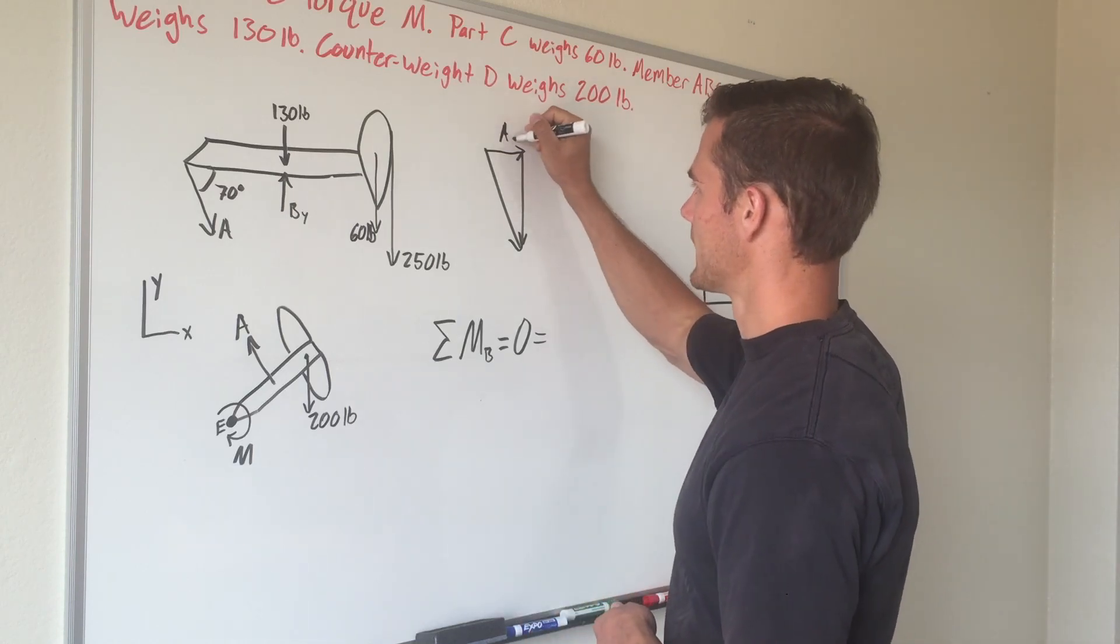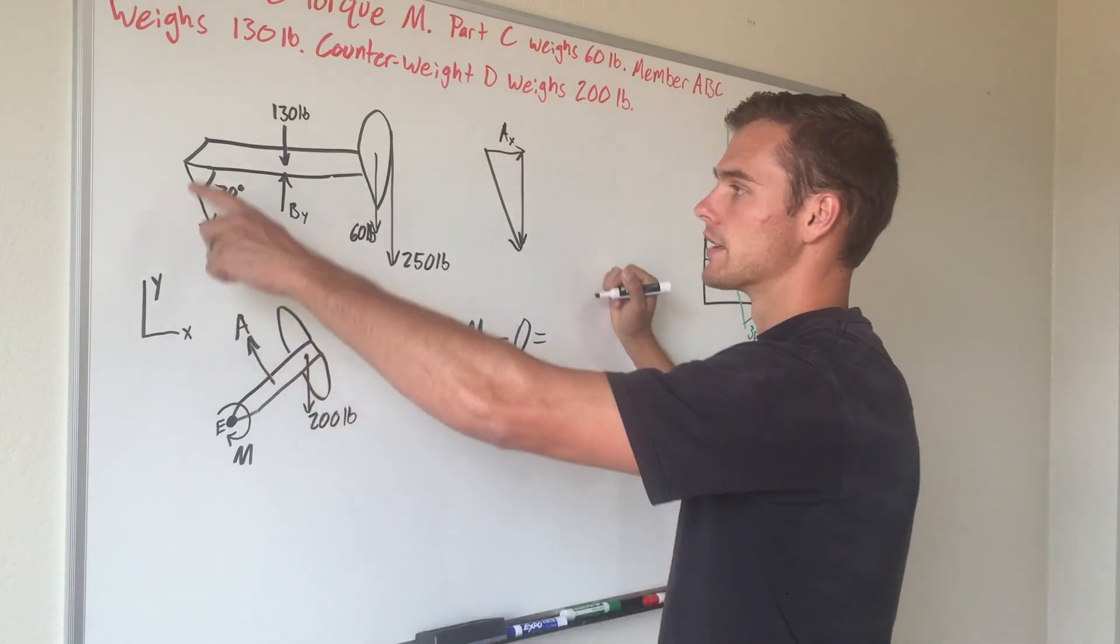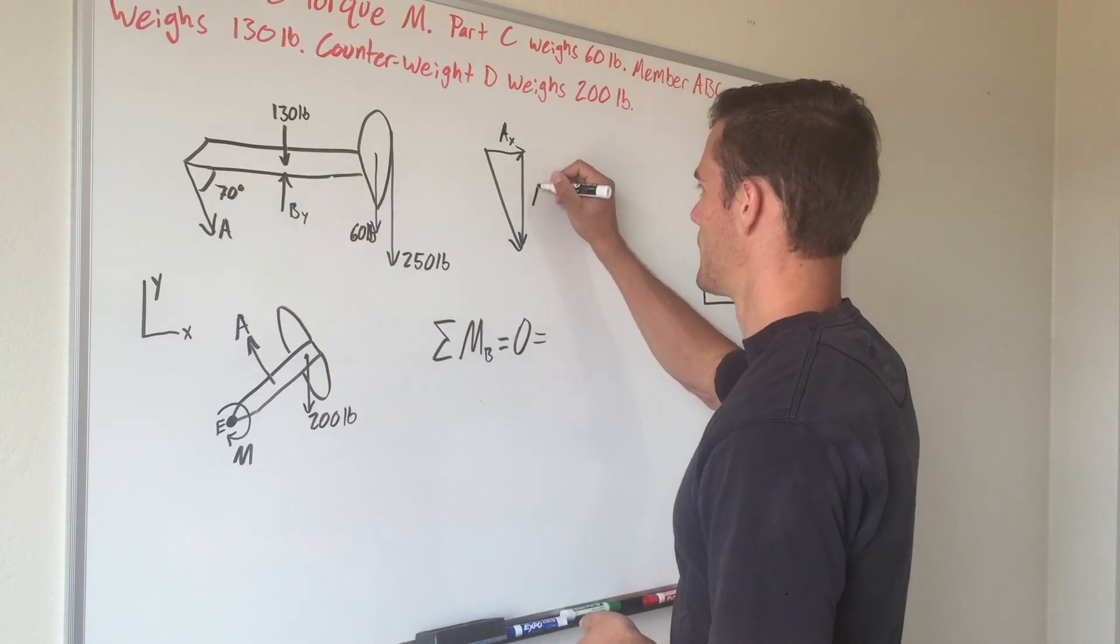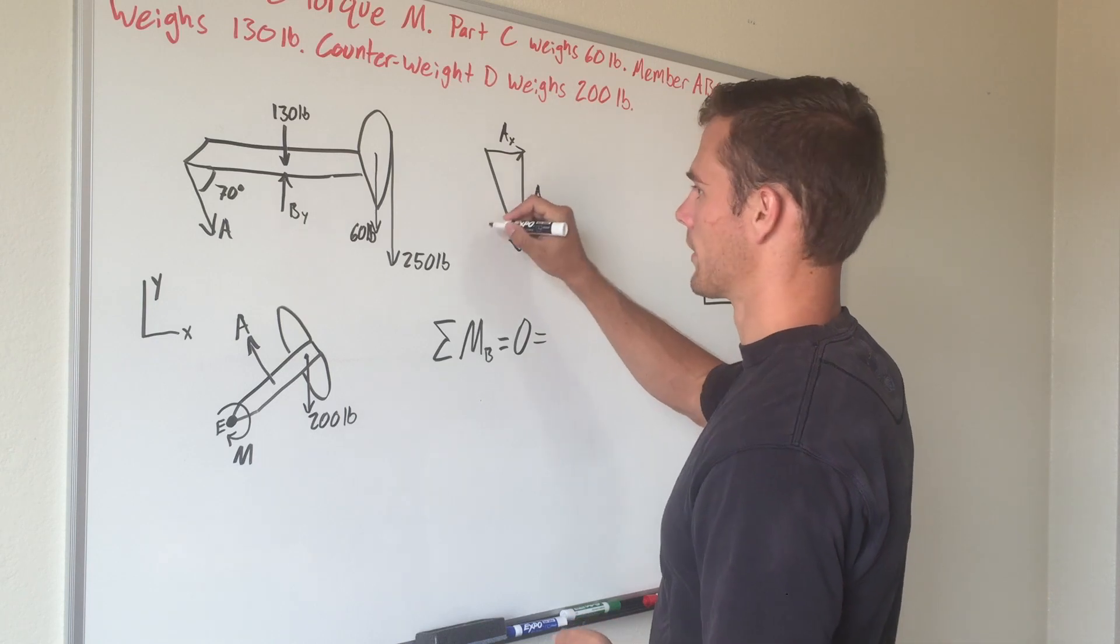The x component, A_x, is going to pass through point B and therefore won't cause rotation. But A_y is what we're looking for.